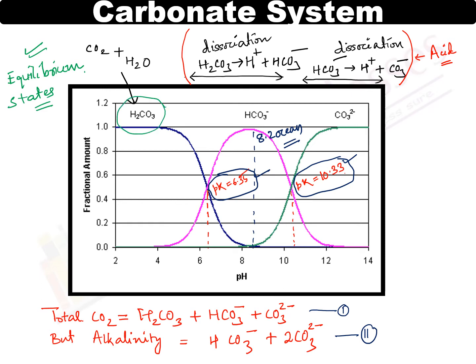Carbon dioxide reacted with water and formed bicarbonate ions — that is a simple concept you know. The pH range for this is 2 to 4.5. So in the pH range of 2 to 4.5, this is the range you will see for bicarbonate formation.